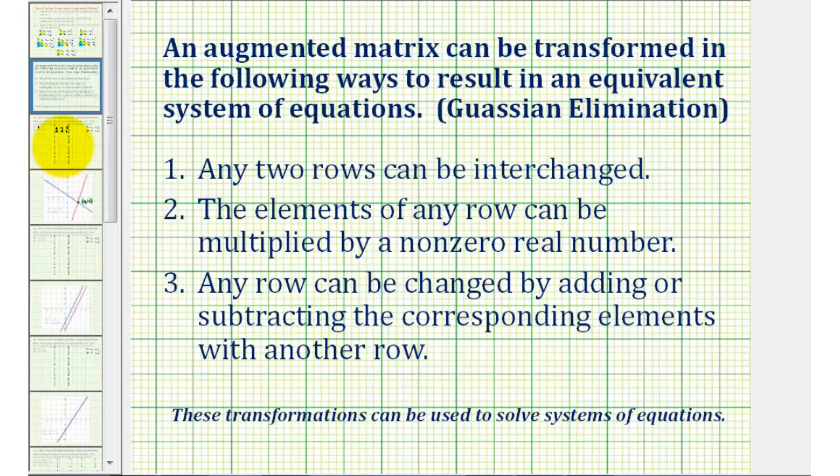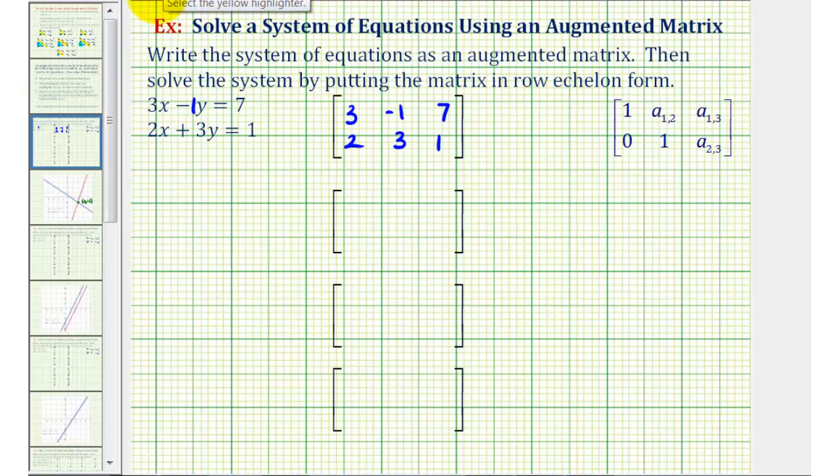So going back to our example, we want to start by obtaining a zero below the main diagonal, or in this position here. So what we're going to end up doing is obtaining opposites in this first column and then add the two columns together to obtain the zero. And since the least common multiple of three and two is six, let's go ahead and make this element a negative six by replacing row one with negative two times row one. Let's make this a positive six by replacing row two with three times row two.